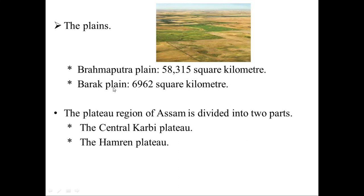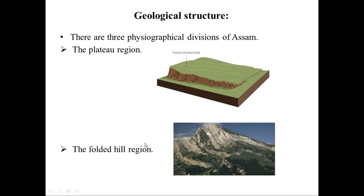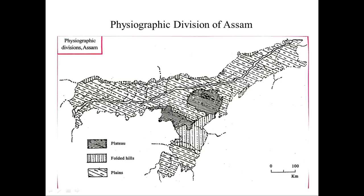The plateau region is divided into two parts: Central Karbi Plateau (West Karbi Anglong) and the Amaran or East Karbi Plateau. Between these two plateaus — West Karbi Anglong and East Karbi Anglong — there is a small distance, and that is the Howsai area. The Central Karbi Plateau is isolated from the Amaran side by the Kopili River and its head streams.